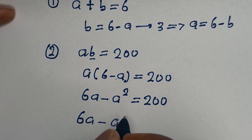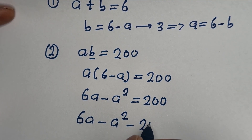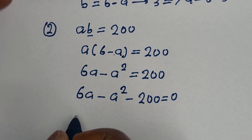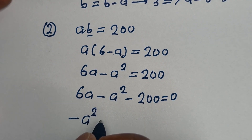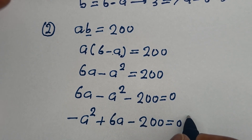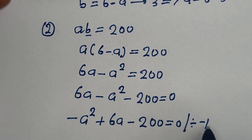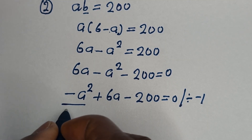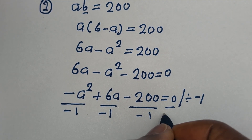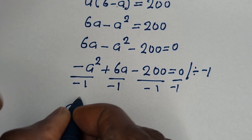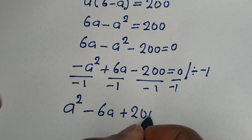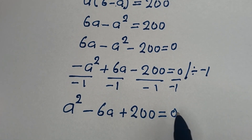So 6A minus A squared minus 200 is equal to 0. Let us put this in standard form: minus A squared plus 6A minus 200 is equal to 0. We can now divide the whole equation by minus 1, giving us A squared minus 6A plus 200 is equal to 0.